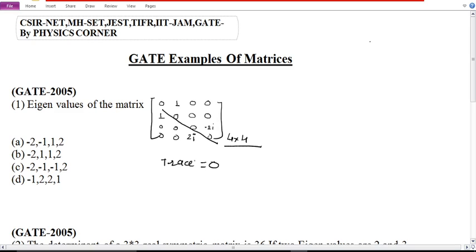Now, I will choose the option where the sum equals zero. The first option is minus 2, minus 1, plus 1, plus 2 equals to zero.